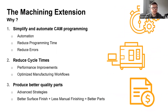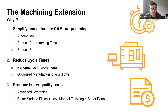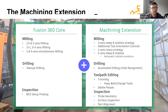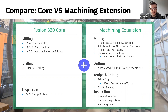So more specifically, why the machining extension? We want to simplify and automate your workflows, making use of different technologies within the machining extension to reduce your programming time, reduce errors, and ultimately make better components. Number two is to reduce cycle time — making use of powerful technology to improve efficiency. And finally, produce better parts. Our advanced strategies allow customers to reach full potential by offering the tools that are needed. Better surface finish plus less manual finishing equals better components. Remember, if you have any questions, feel free to type in the chat — Kieran is monitoring it.